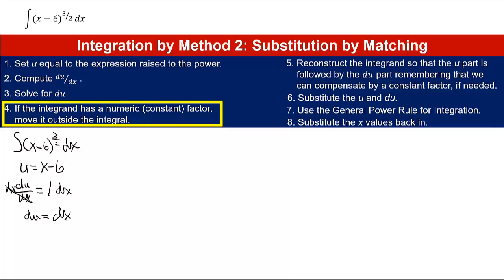Now step 4 says if the integrand has a numeric constant factor, move it outside the integral. Well there is no numeric factor inside the integral. The numeric factor, if there were one, would be something inside the integral that's just a number, like 5 times that, or 7 halves times that. There is not one here, so there is nothing to worry about with step 4.